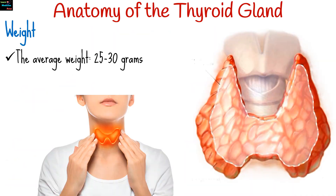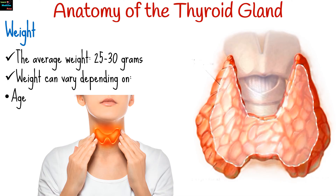The average weight of the thyroid gland in adults is about 25 to 30 grams. However, this can vary depending on factors such as age, gender, and physiological conditions like pregnancy.